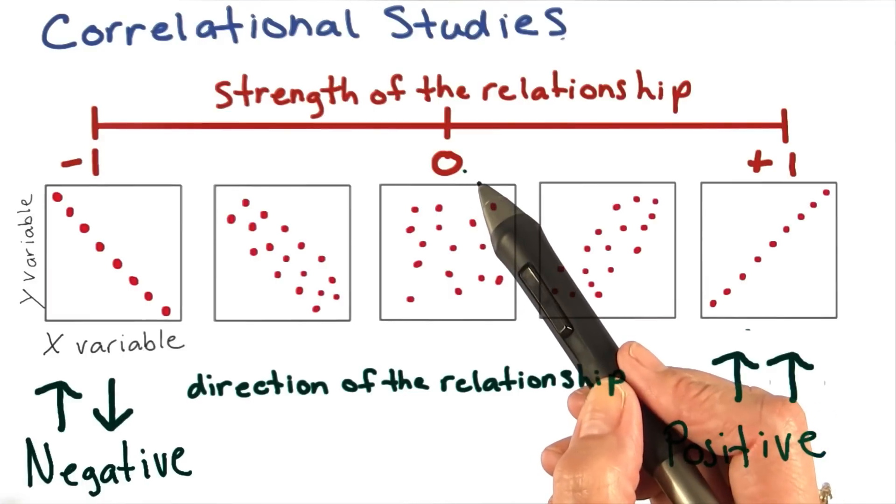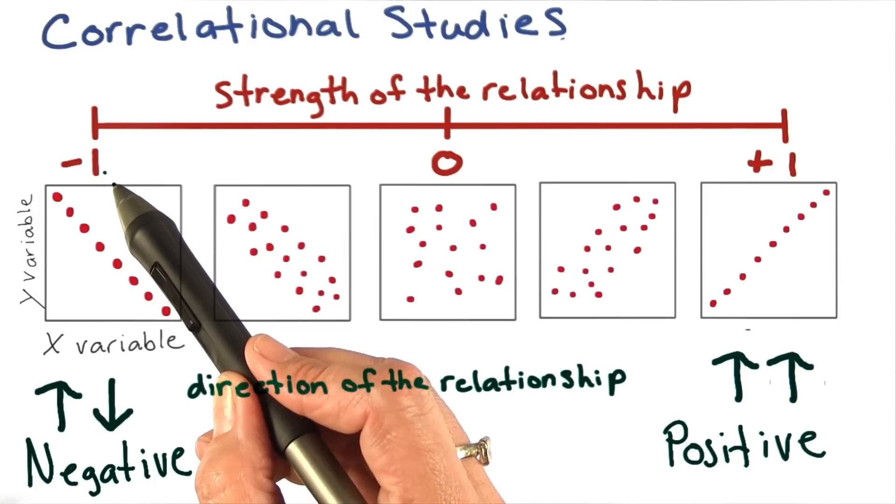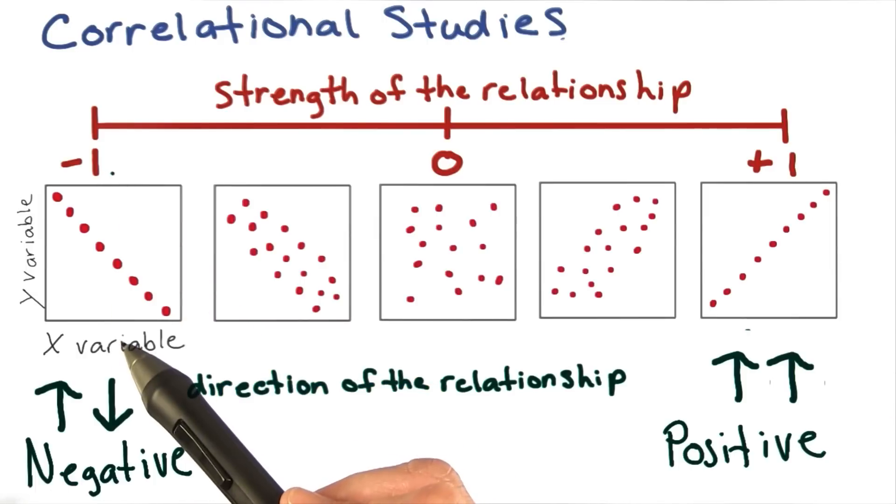For the strength of a relationship, we can have a positive relationship. We can also have a negative relationship. Here, in a negative correlation, as scores increase on the x variable, they decrease on the y variable.